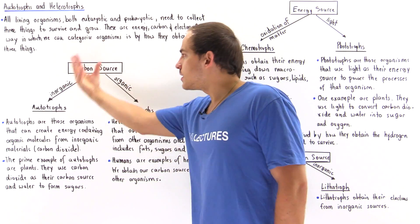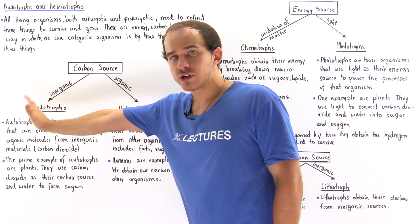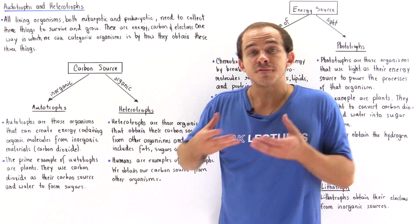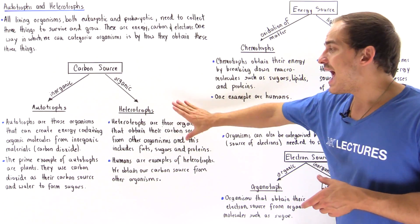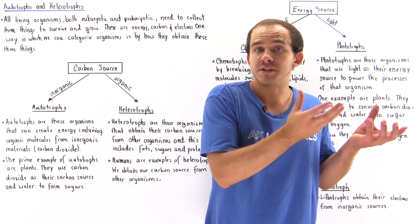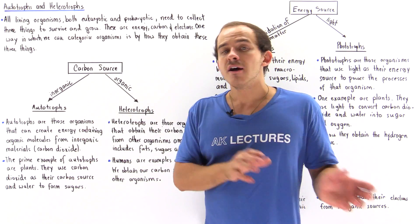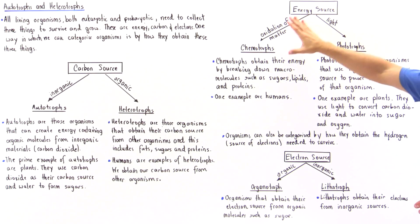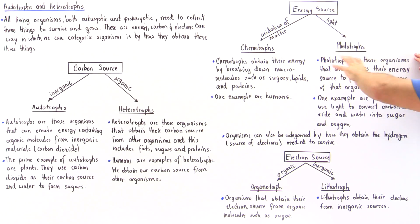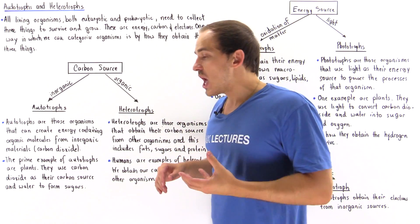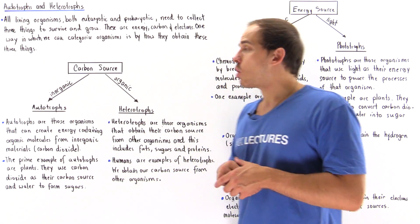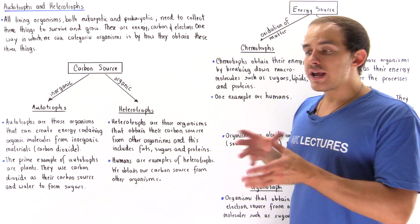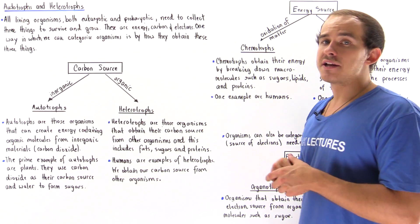In summary, we have three ways to categorize organisms. For carbon source: autotrophs synthesize organic molecules from inorganic starting materials such as carbon dioxide, while heterotrophs must obtain organic material from other organisms — this includes humans. For energy source: phototrophs use light as their energy source — for example, plants use light energy to synthesize carbohydrates — while chemotrophs obtain energy by breaking down or oxidizing either organic or inorganic matter.